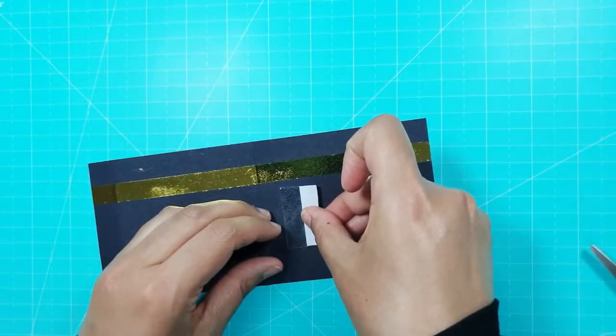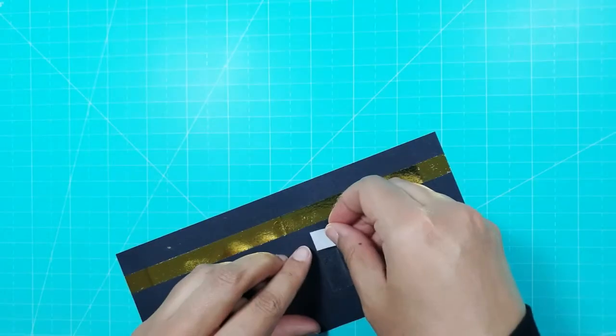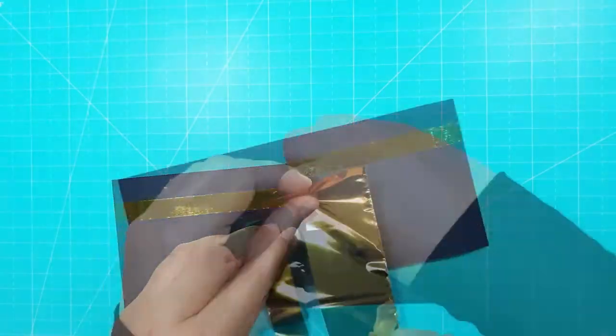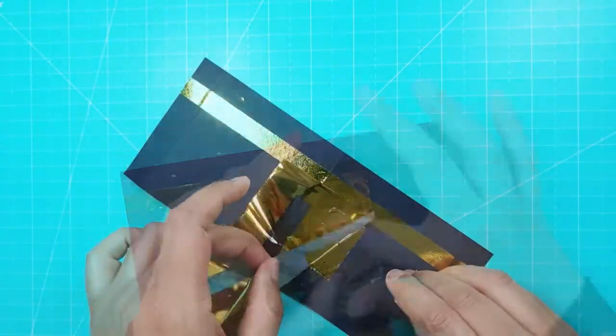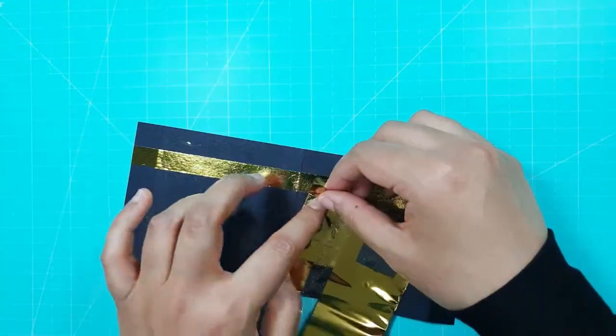I then took one piece of card and added tape for the door of the Ka'bah which is known as Baab al-Rahma, the door of mercy. On the Ka'bah itself the door is more than two meters above the ground so I made sure to position it quite high.